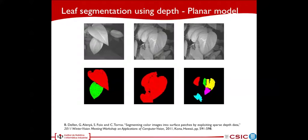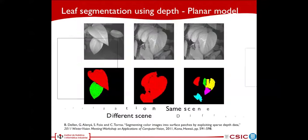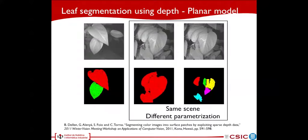Segmentation in this work is based on the article of Dalian et al., presented at the workshop on applications of computer vision in 2011. Here we use the combination of intensity and depth images for leaf identification. But due to their cluttered structure, plants are a complex scene to segment. Different scenes require different parametrizations and it is not difficult to fall into under- or over-segmentation, as can be seen in the current slide.